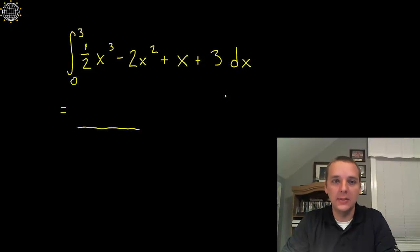So let's say we had a definite integral like this example: integral from 0 to 3 of 1/2 x cubed minus 2x squared plus x plus 3, and so we want the area under that curve from 0 to 3.